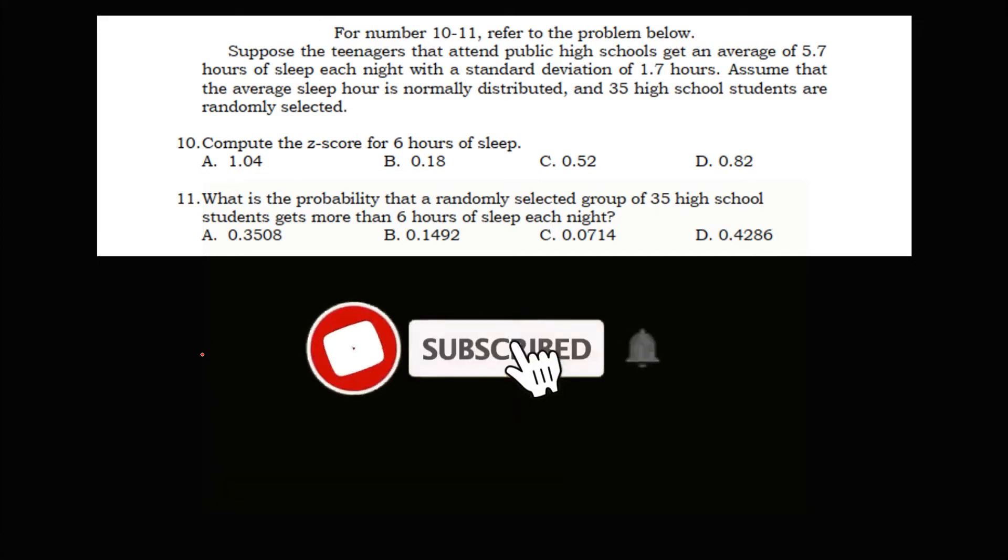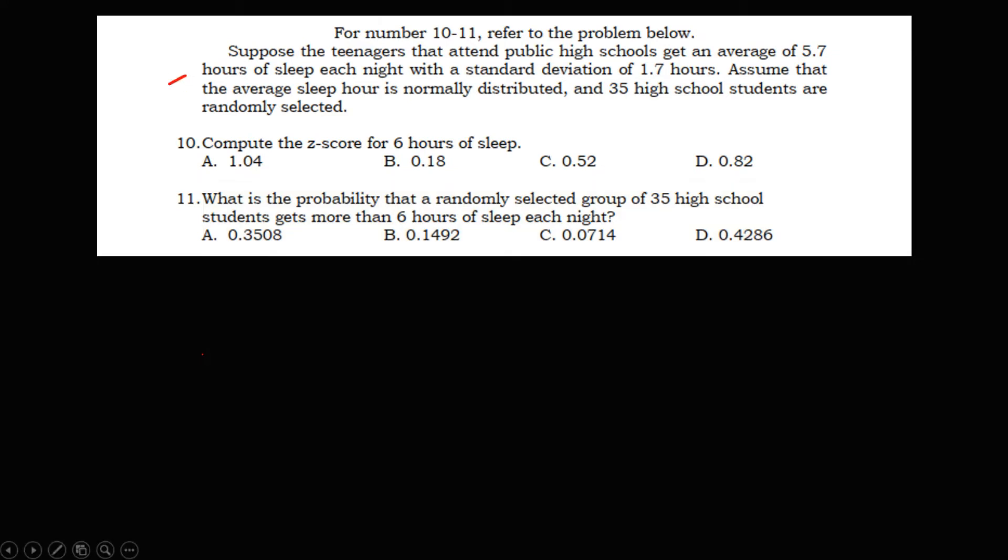Welcome to MathStorya. Let's have this problem. From this problem, these are the given. We have the average or the mean, that's 5.7. Then the standard deviation or the population standard deviation, that's 1.7. Then we have this sample size, 35 high school students. That's n, that's 35.